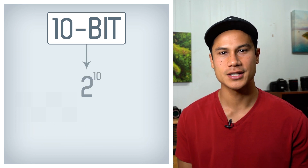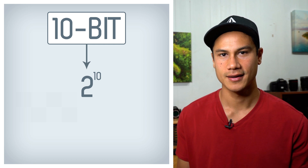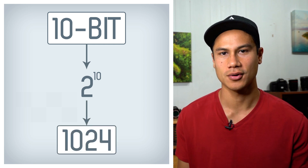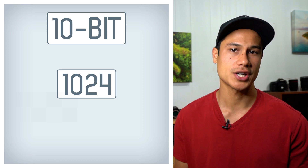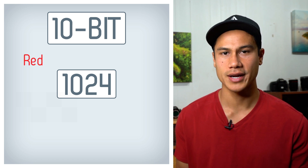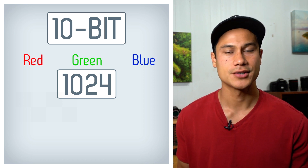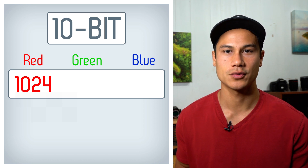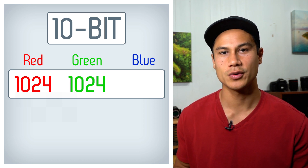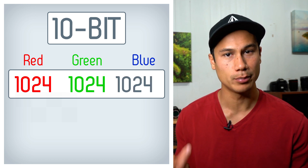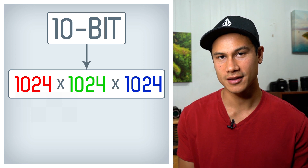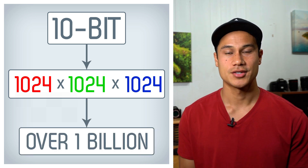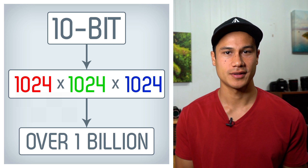10-bit basically means 2 to the power of 10, and you multiply that out, that comes out to 1024. Now, your camera has three different channels: red, green, and blue. So in 10-bit, you have 1024 shades of red, 1024 shades of green, and 1024 shades of blue. And then you multiply them together, you get over a billion color combinations. So that's your bit depth, or your color depth.